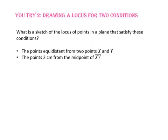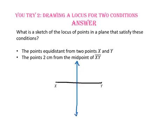Pause the video and do U-try number 2. What is the sketch of the locus of points in a plane that satisfy these conditions? First, the points equidistant from two points X and Y — let's draw points X and Y and the set of equidistant points. Our second condition wants the points 2 cm from the midpoint of segment XY. Let's draw segment XY, locate its midpoint, then draw the points 2 cm from that point. The locus meeting both conditions will be the two points where the purple circle intersects the blue line.